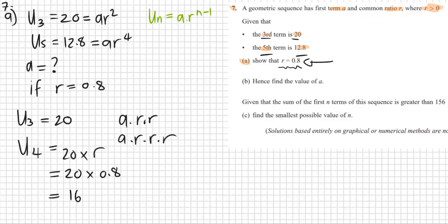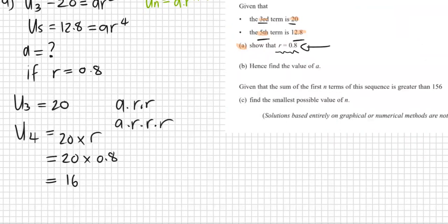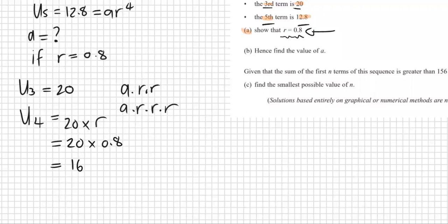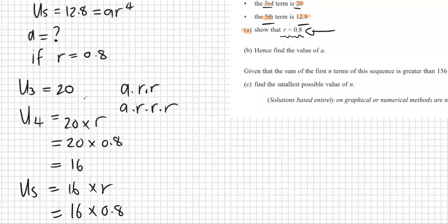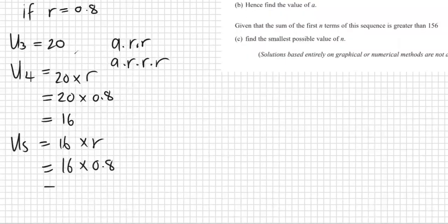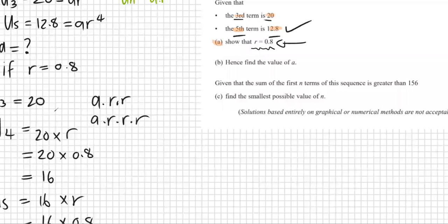So far that doesn't prove anything. If we do it one more time and land on the correct u_5, then we have proven it. u_5 is going to be u_4 times another r, so 16 times 0.8. That gives us 12.8, which is correct.